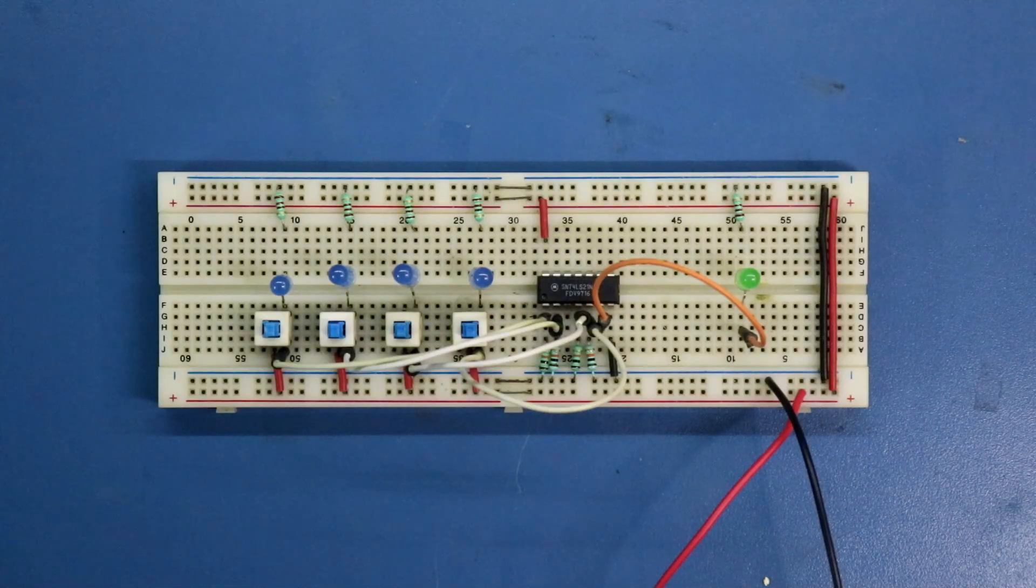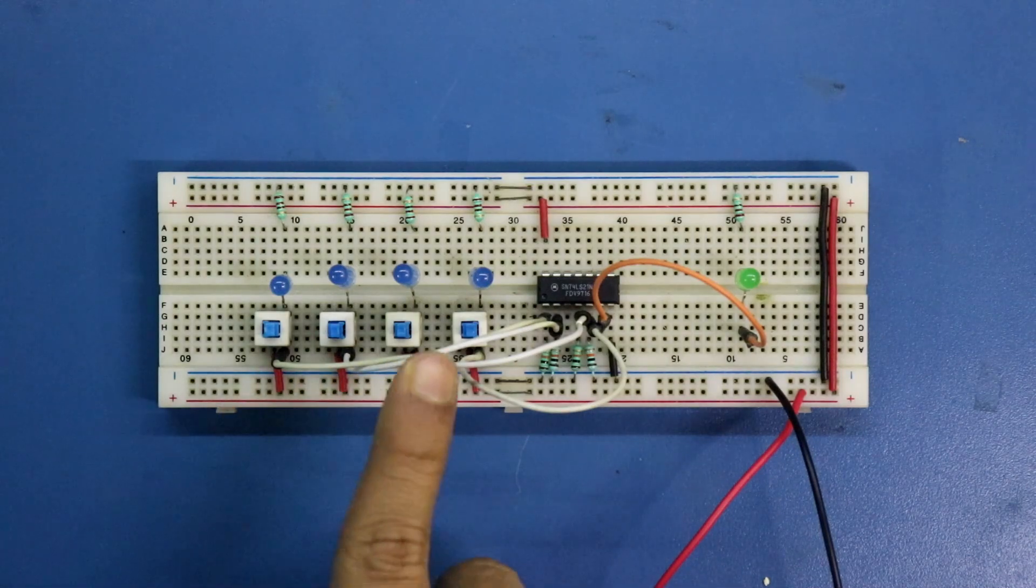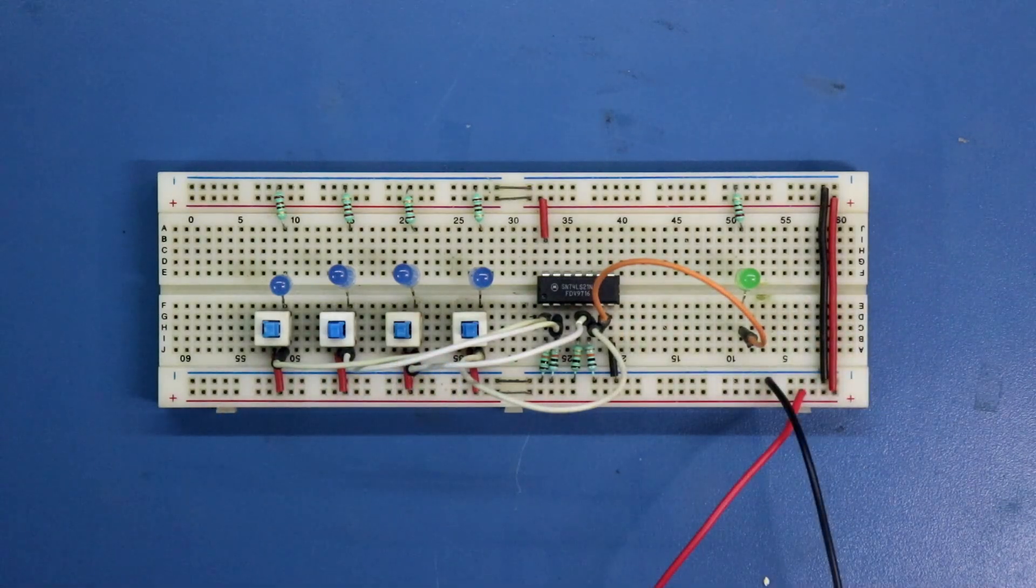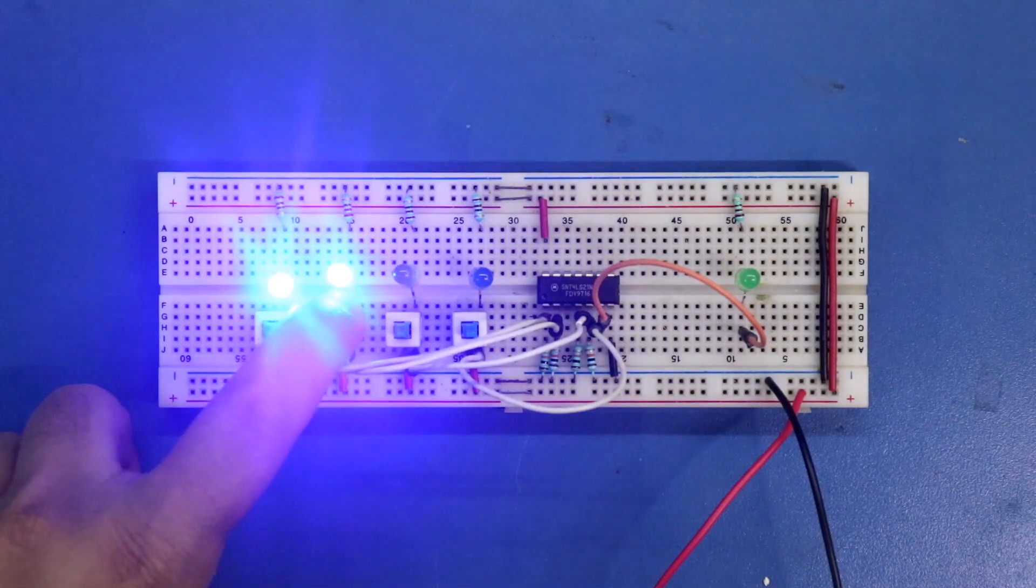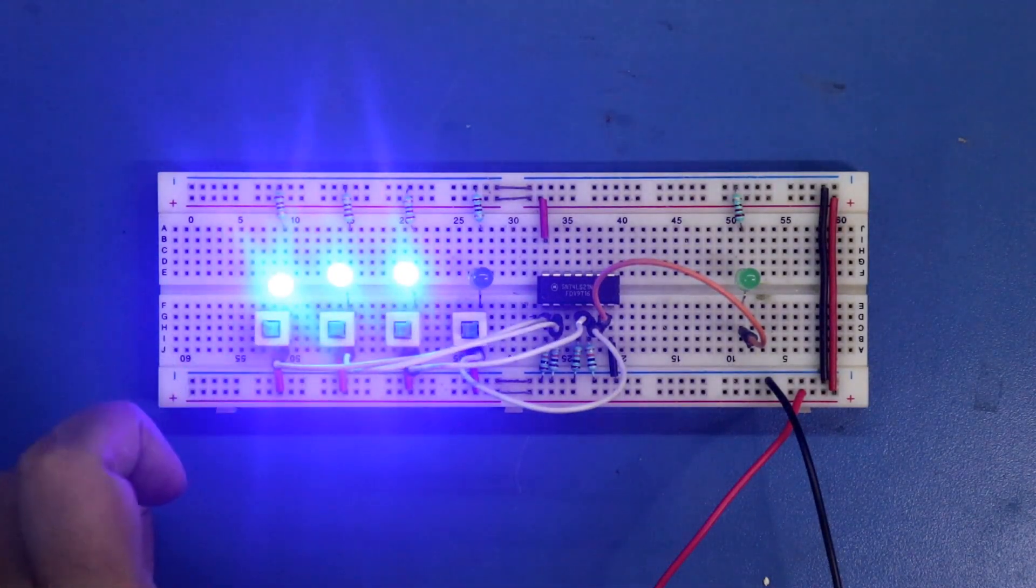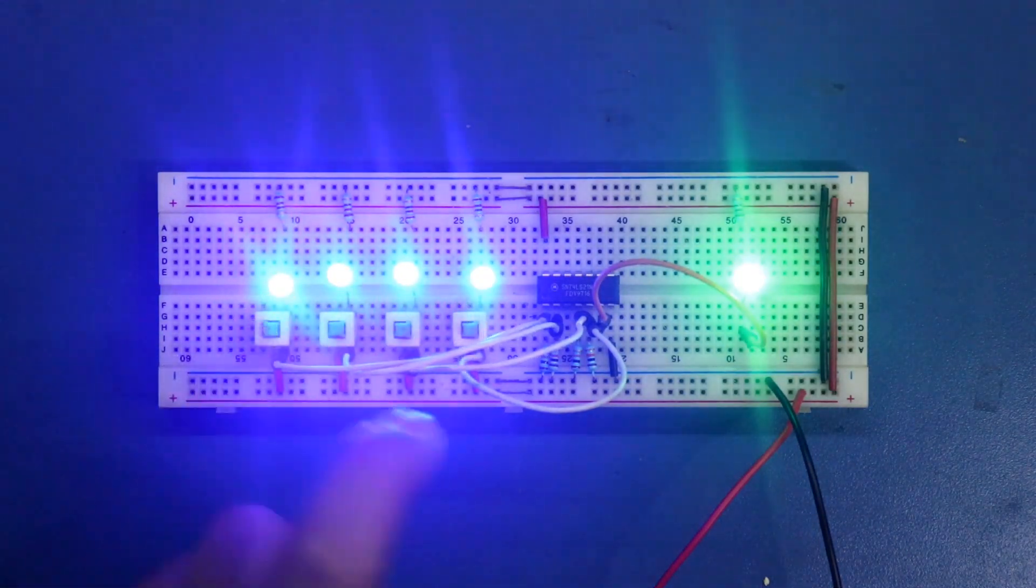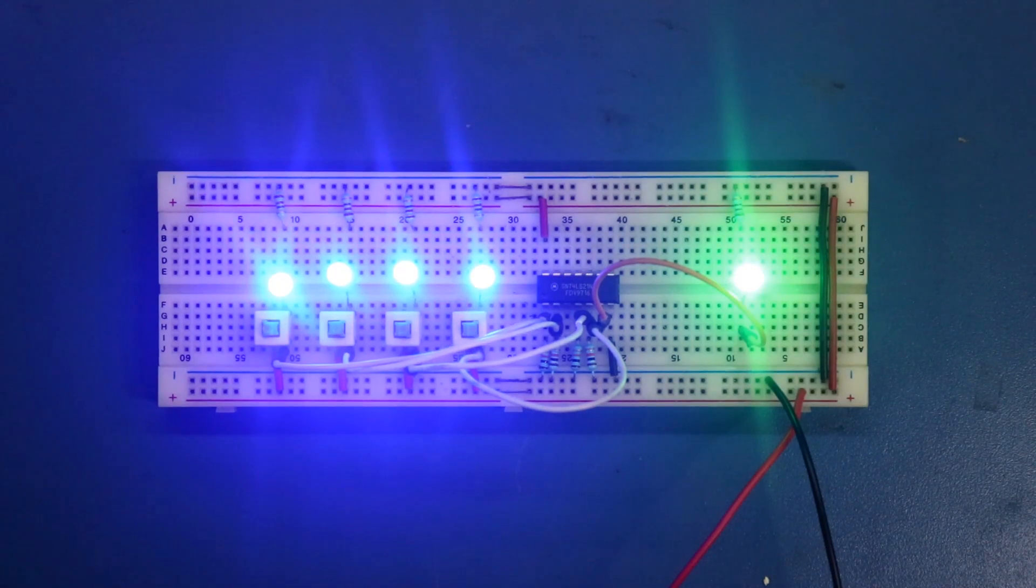IC 7421 is a 4-input AND gate. Here we have 4 inputs and this is output. All the inputs 1 means will get 1s output. In this video we are going to see its practical circuit.